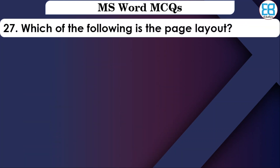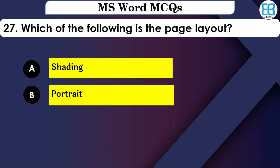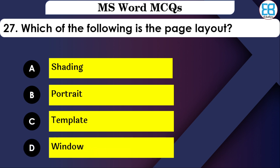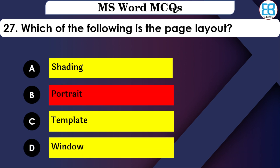Which of the following is a Page Layout option? The options are: Template, Window, Portrait, or Landscape. The correct option is Portrait and Landscape — these are page layout orientations.